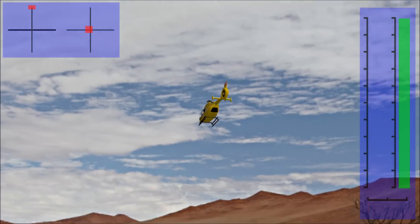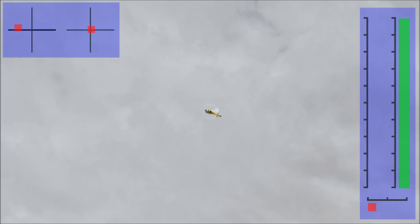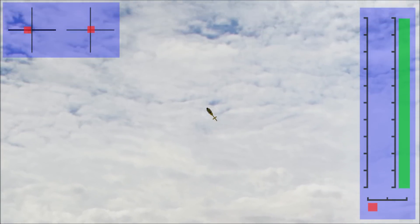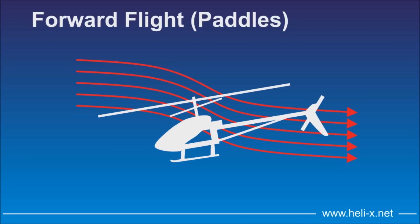You can see this in the video — the cyclic stick, the right stick, is moved forward to compensate the nose-up tendency. The classic model helicopter has paddles. Here the situation is such that the air from the front causes the paddle plane to tilt to the front. Since the paddles are coupled to the cyclic pitch of the main rotor blades, this change of the angle of the paddle plane causes the automatic control of cyclic pitch to the front. This compensates the tendency of the helicopter to put its nose upwards.